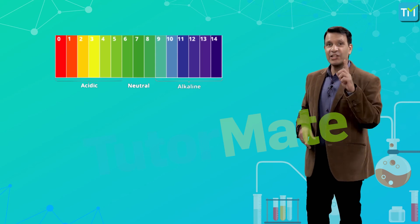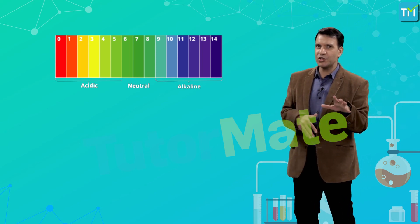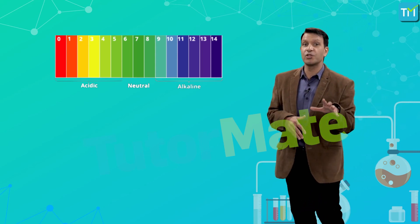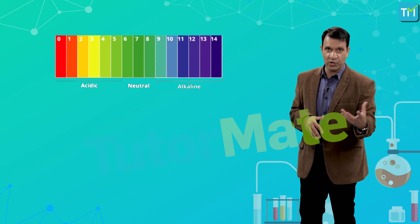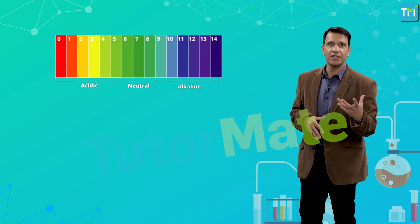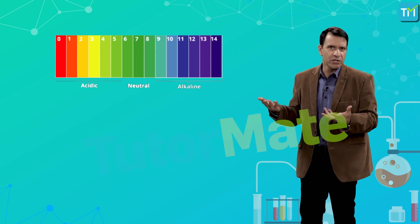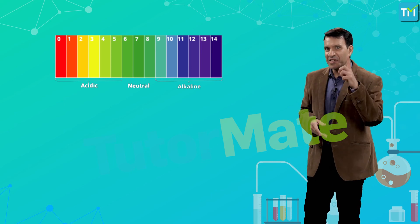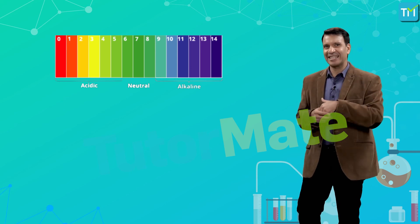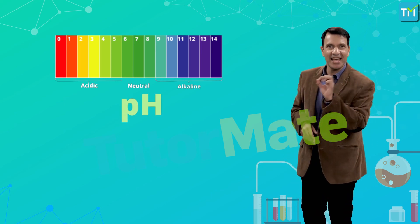In science, we cannot use color change alone to determine the strength of an acid or base — we need to put in some numbers. And there is a way to do that: it's called pH.